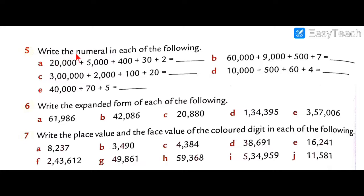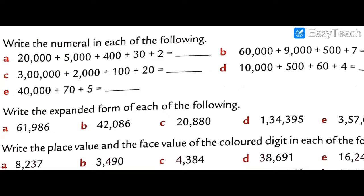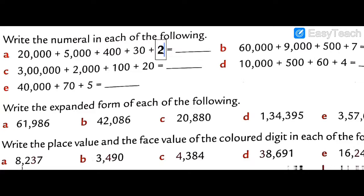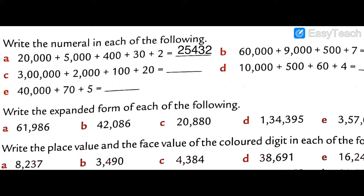Question Number 5: write the numeral in each of the following. They give the expanded number and we write only the digits in the blank. Question 5a: twenty thousand plus five thousand plus four hundred plus thirty-two. So the answer is 25,432.